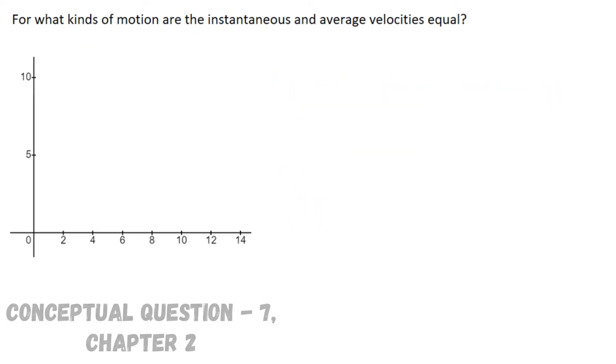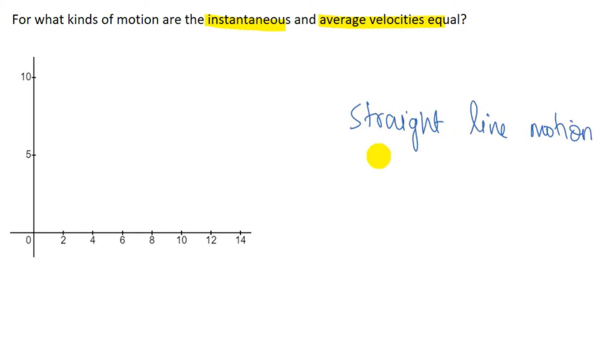Now here in this question they are asking for what kind of motion are the instantaneous and average velocities equal. Now a motion with zero acceleration or you could say a straight line motion with constant speed. You can take this example. This is a v-t graph.